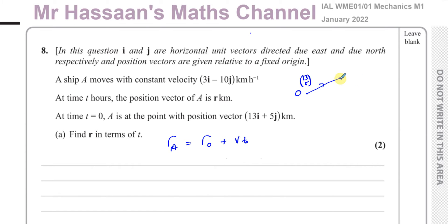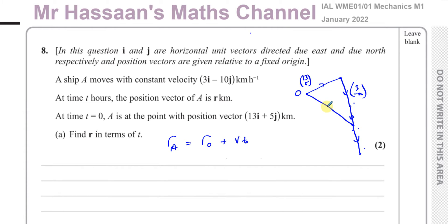It's moving in this direction — 3 and minus 10. So after one hour it will be over there, after two hours over there, after three hours over there, and so on. So the position vector at any time T will be given by this vector. This is the position of A at any particular time T.